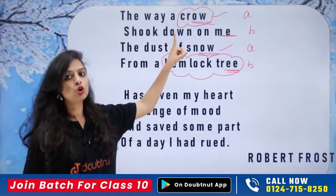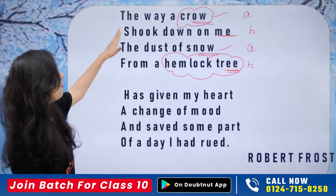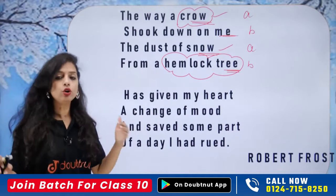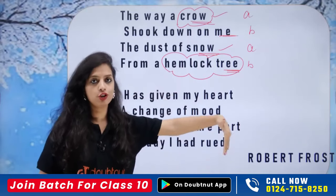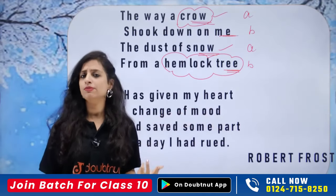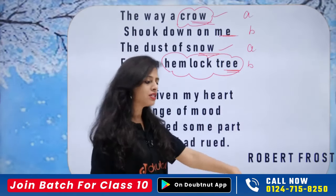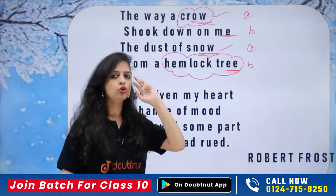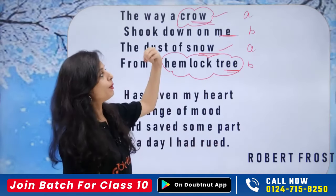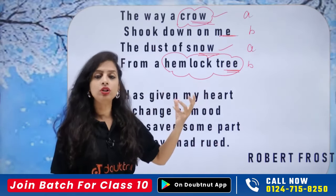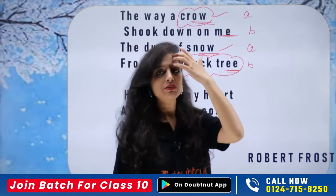So here, it is about symbolizing the crow and the hemlock tree. There are two symbols. The poem says: 'The way a crow shook down on me / The dust of snow from a hemlock tree.' There is a crow sitting on a hemlock tree, and Robert Frost was passing beneath that hemlock tree. He was in a bad mood — we can understand that before this incident, his mood was already spoiled. He was passing by in a sad, melancholy state.